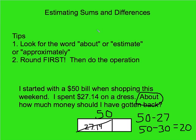So when you're estimating sums or differences, look for those keywords to know whether you're rounding or need an exact answer. After you figure that out, visualize your problem, then round first and do the operation second. Start with the rounded numbers — whether rounding to the nearest dollar, ten, or hundred — and then do the operation with those easier numbers that you can do in your head. Go ahead and move on to your next activity in the center.